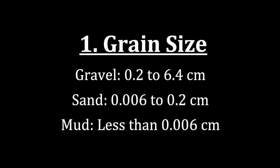The largest grain size that we will look at is gravel, ranging from 0.2 to 6.4 centimeters in size. The middle size is sand, ranging from 0.006 to 0.2 centimeters in size. And the smallest is mud, looking at particles or grains that are less than 0.006 centimeters in size.